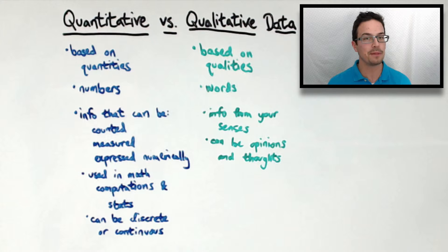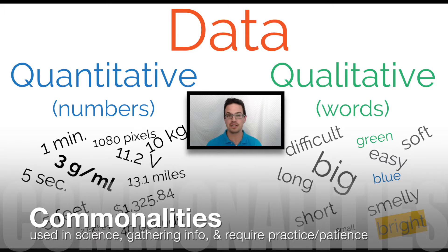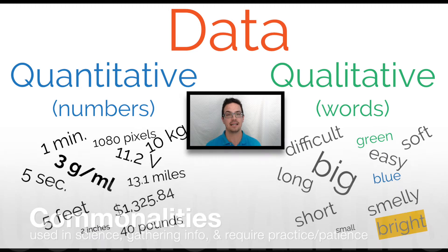It is important to note that some people are better at describing things than others. Some commonalities between the two types of data are that they both are used in science or the study of anything, both involve gathering information, and both involve a lot of practice and patience when gathering and organizing the data.